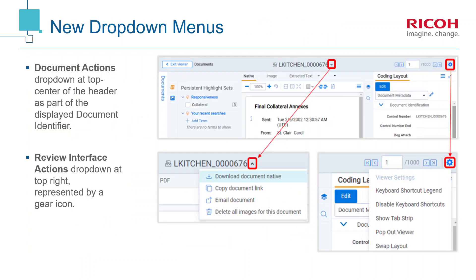Two new drop-down menus consolidate document actions at the top center area of the document header, and review interface actions under the gear icon at top right. The options available in these menus may differ depending on your specific permissions in your workspace.